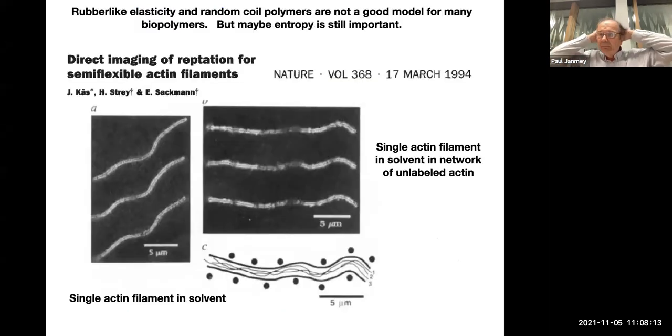The other important landmark is this beautiful paper from Eric Sockman's lab done by Josef Case and Helmut Stry, which I think is one of the first demonstrations that you can take a biopolymer, in this case a fluorescently labeled actin filament, and look at its thermal gyrations either in dilute solution or a single labeled filament enmeshed in a network of unlabeled neighbors. You can already see that the amplitude of the undulations is different if a filament is free in solution or stuck in a tube. This was an important paper because it was the first visual demonstration of reptation of a polymer in a network of its neighbors.